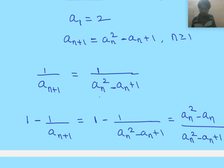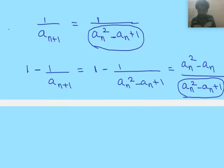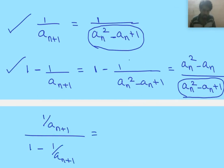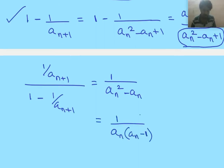The idea now is to get rid of these denominators. To do that, we divide these two equations: 1 by a_{n+1} divided by (1 minus 1 by a_{n+1}), giving us 1 by (a_n squared minus a_n). This is 1 by (a_n times (a_n minus 1)). Doing the partial fractions, this is the same as 1 by (a_n minus 1) minus 1 by a_n.